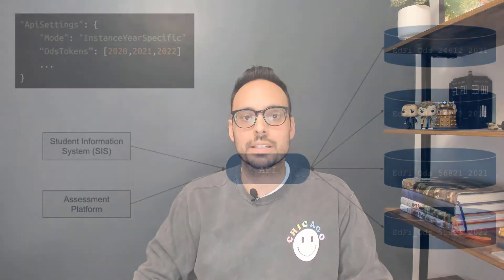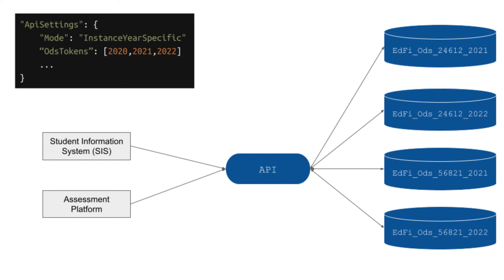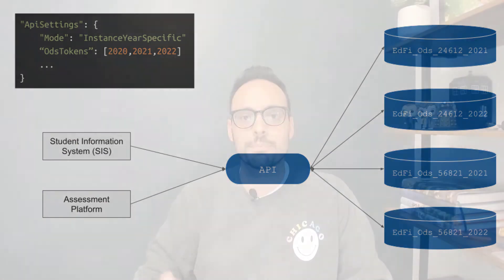Instance Year Specific is our final API mode to cover. This is an emerging EdFi API mode that has already been implemented on the API layer but not yet documented fully in TechDocs. This API mode allows a single EdFi API to support ODS segmentation by both LEA and school year. I'll have a future video on this channel that will go deep into this API mode. This mode is a great option for collaboratives and education service agencies.